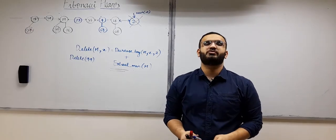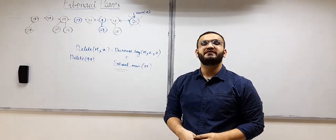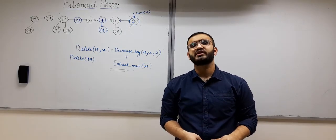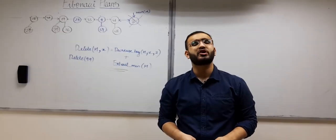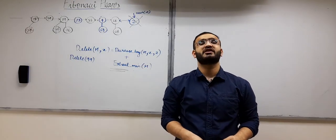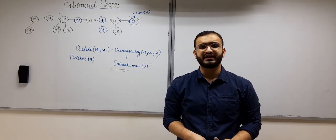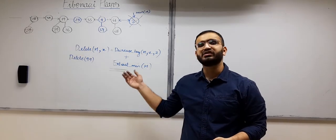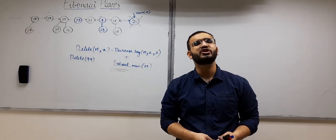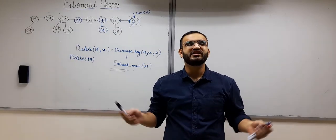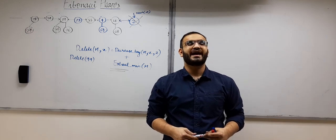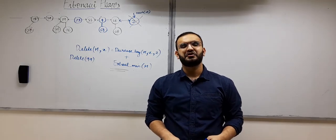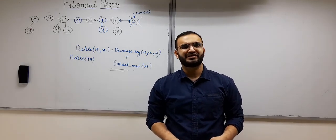That's all for Fibonacci heaps. In the last four videos we have learned many things about Fibonacci heaps — from what they are and their advantages, to basic operations like union of two Fibonacci heaps, finding minimum, creating a new heap, and inserting an element. Then we saw the extract minimum operation in the previous video, and in this video we learned the decrease key operation and the delete operation. Share these videos and let me know in the comments if you have any suggestions. In the next video we will start another interesting advanced data structure.